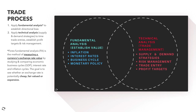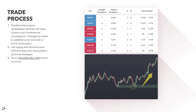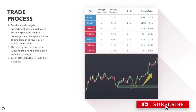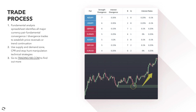The trade process involves our fundamental analysis spreadsheet, which you can access at trading180.com for less than a pound a day. We look for fundamental convergences and divergence trades to establish price reversals or trend continuation. I also have a video on fundamental convergence divergence linked in the top right. Once we've established our fundamental bias, we use supply and demand zones, CPR — capture pain relief — and stop hunt manipulation technical strategies to enter trades either long or short.